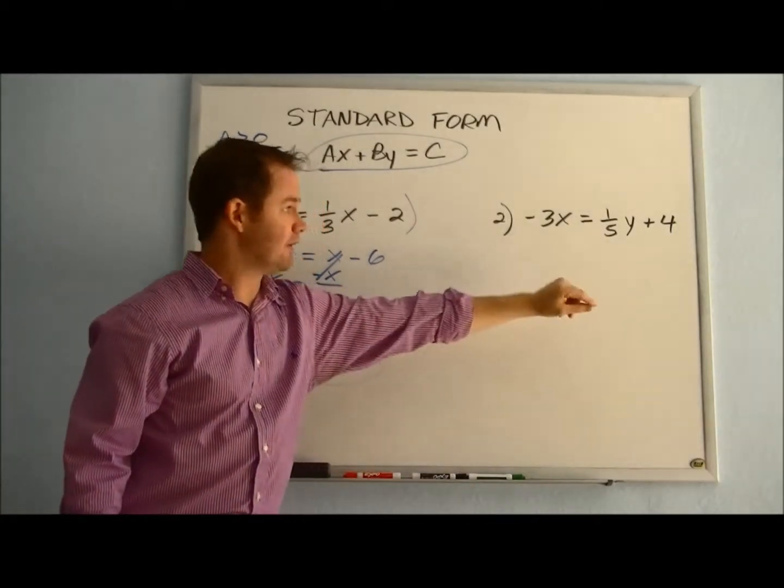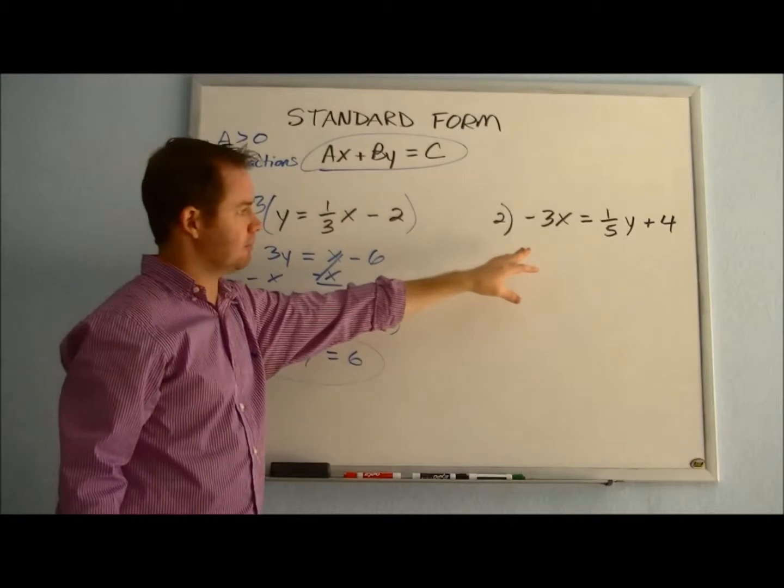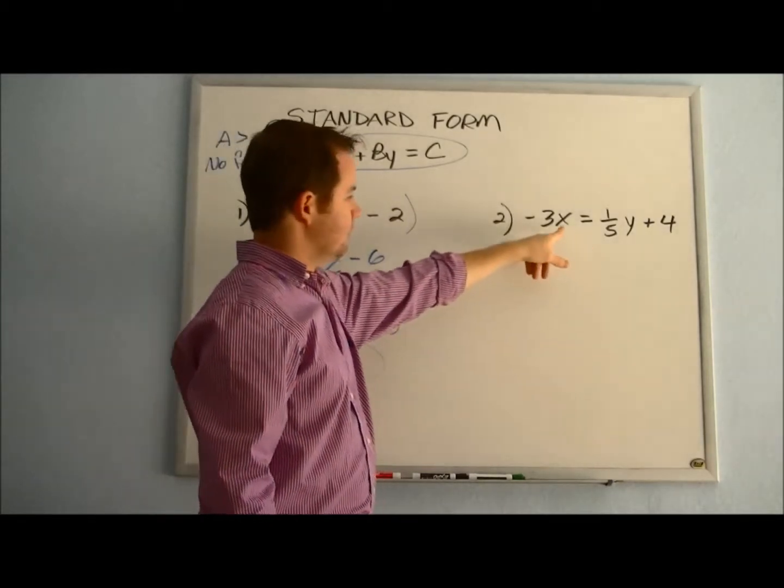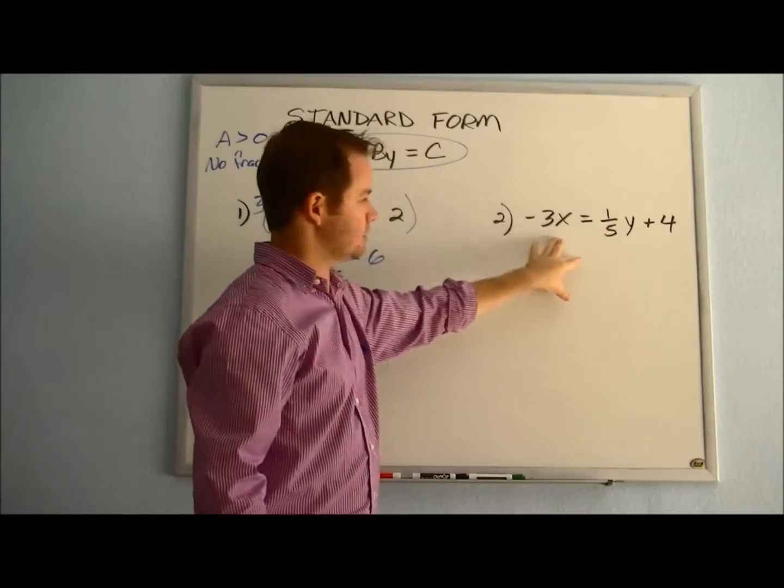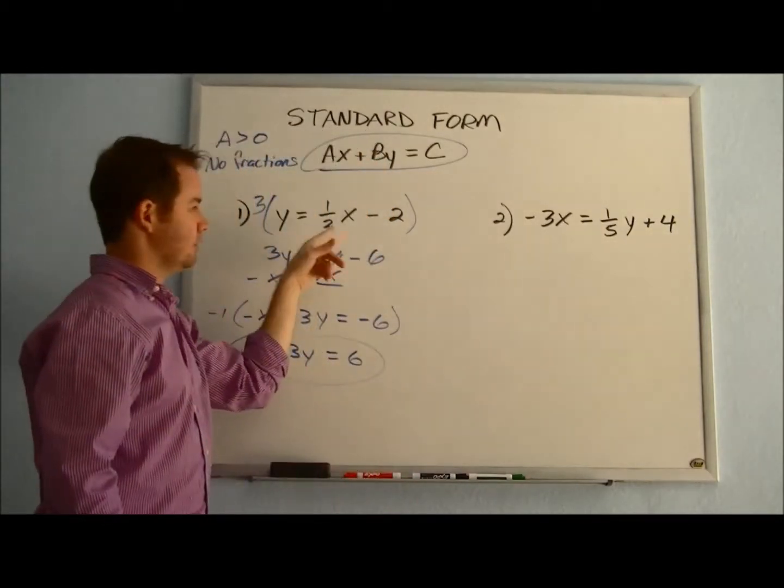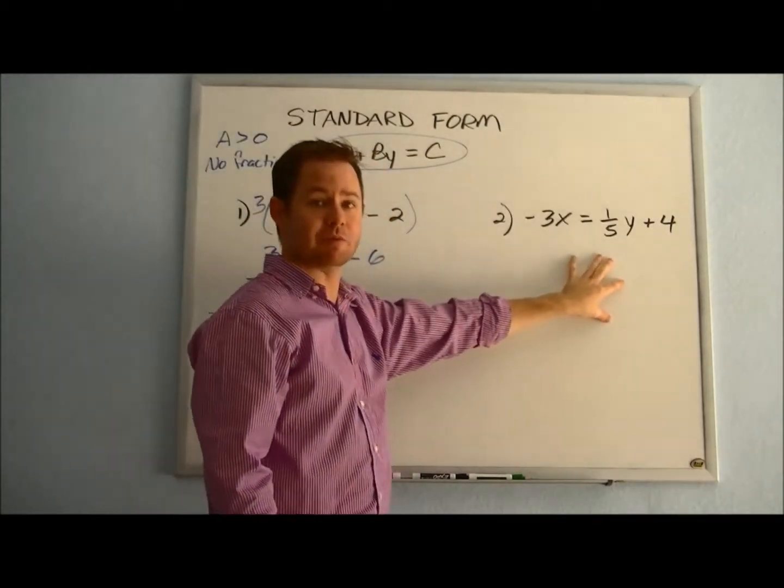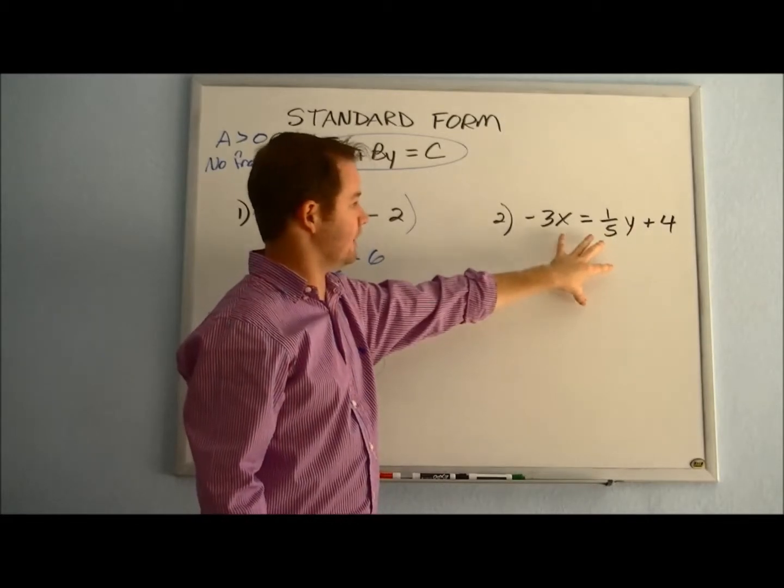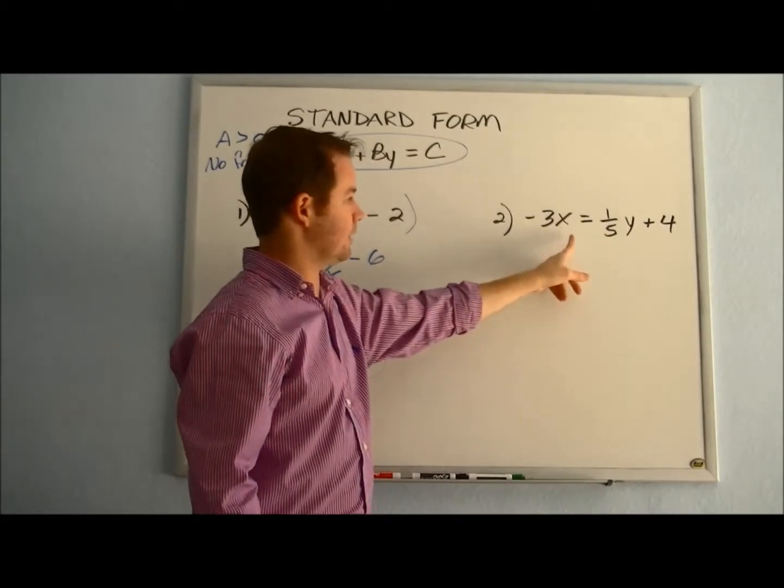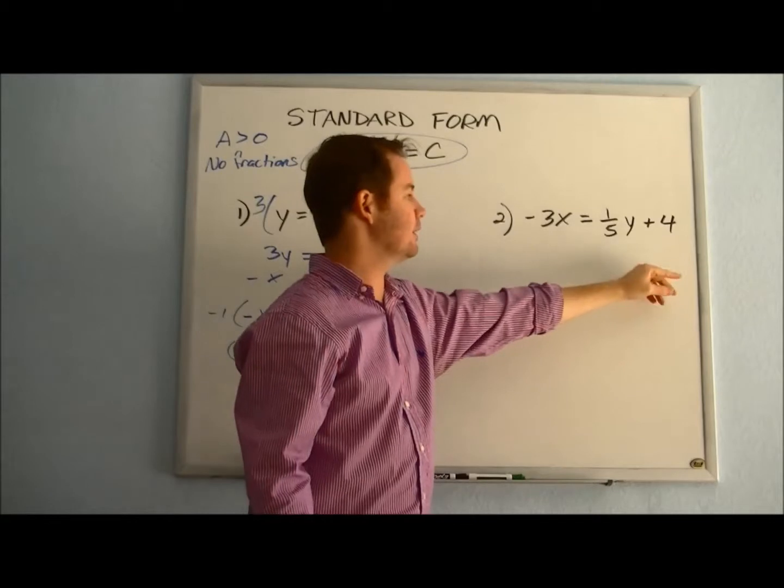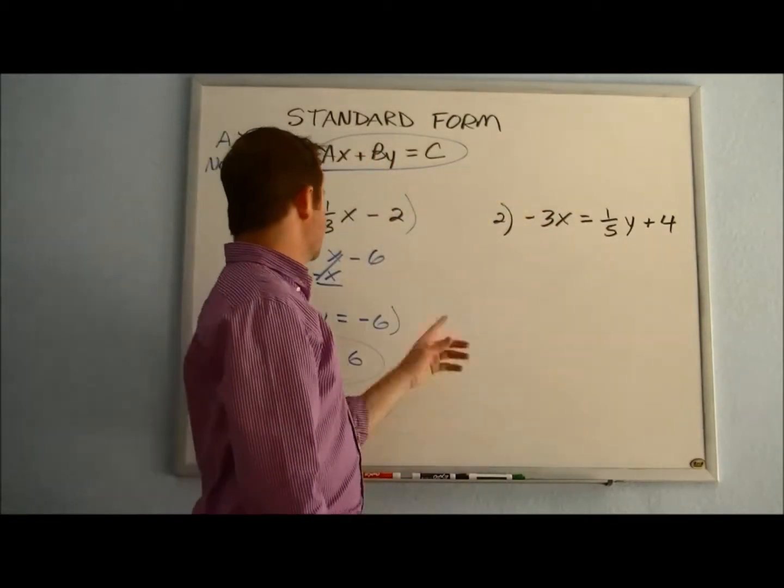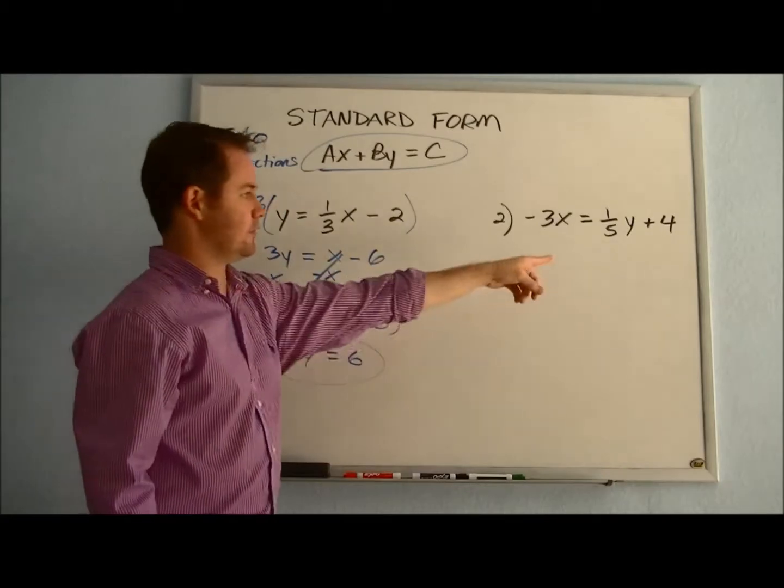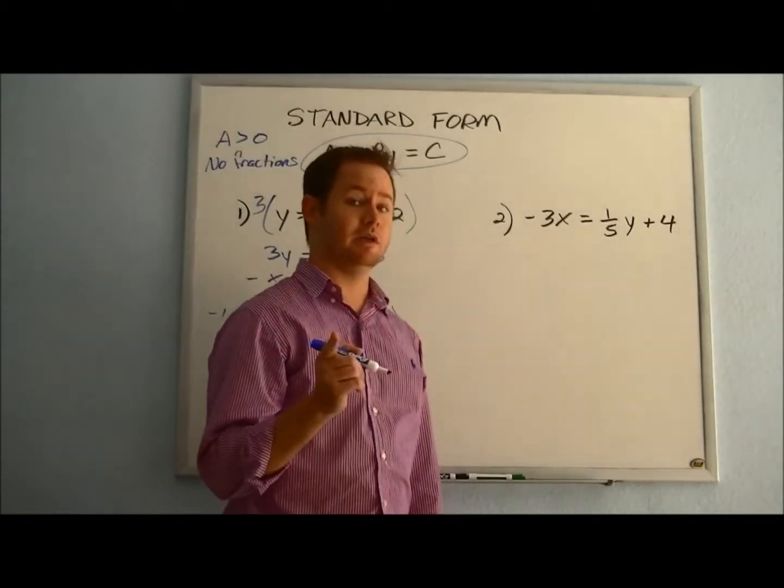So over here, we've added in a new challenge where we now have the x on this side, but we have the y on the right side. So we're just switching up the way that this one looked. It's no longer in slope intercept form. This is just the equation written -3x = 1/5y + 4 that we need to rearrange so that it looks like standard form. So just like we did over here, first things first, we're going to eliminate the fraction.